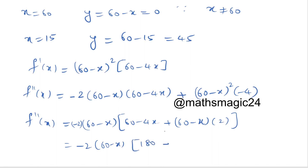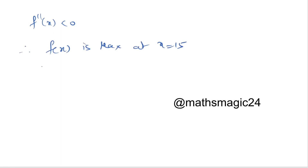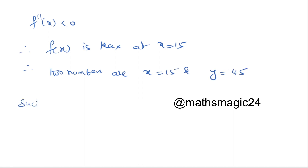Evaluating at x equals 15: f''(15) equals minus 2 times (60 minus 15) times (180 minus 6 times 15), which is less than 0. Therefore f''(x) is less than 0, so f(x) is maximum at x equals 15. Therefore the two numbers are x equals 15 and y equals 45, such that xy³ is maximum.